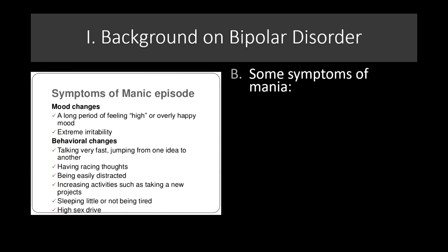Some symptoms of mania — and this is the part sometimes difficult to understand, as depression most people get. Manic episodes are long periods of feeling high or overly happy, but can also be extremely irritable. Generally, people are up for long periods of time, talking fast, jumping from one idea to another, having racing thoughts, being easily distracted, and tending to increase their activities — taking on a lot of new projects but not getting to all of them. They sleep little and often have a very high sex drive.